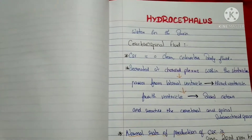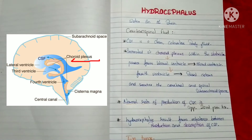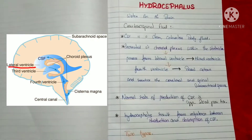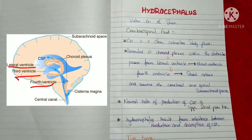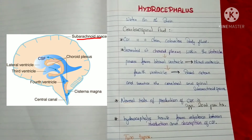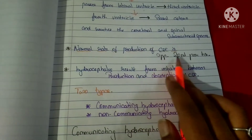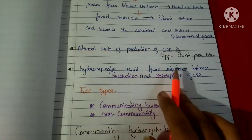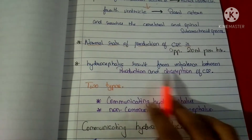In this diagram, you can see the choroid plexus where the CSF is produced, present inside the ventricles. It passes from the lateral ventricle to the third ventricle, to the fourth ventricle, then to the basal cisterns, and reaches the cerebral and spinal subarachnoid spaces. The cerebrospinal fluid is produced at a rate of approximately 20 milliliters per hour. Hydrocephalus results from an imbalance between the production and absorption of the CSF.